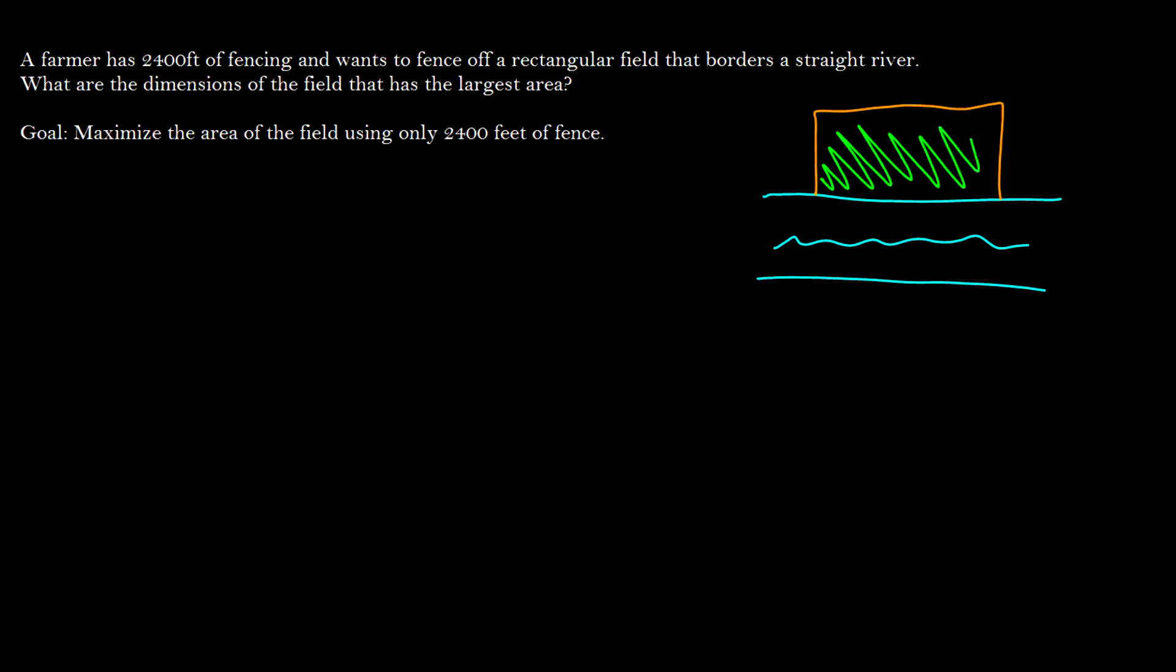But we only have 2,400 square feet of this fence. So maybe we have 1,200, 600, and 600, or we might have another combination. Let's say we have 1,500 and that means we have 900 left over, so we do 450 and 450, and we want to find which dimensions we can make the largest field with.